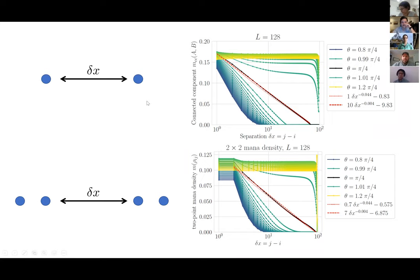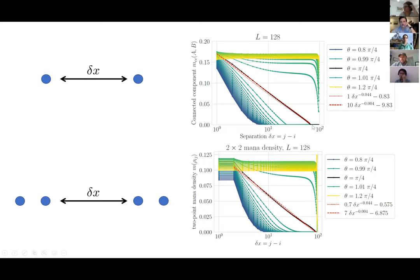Now I'm taking two sites as a function of their separation delta-X — just two qutrits — and asking what is the mana of that two-qutrit system as a function of separation. The black line is at the critical point. The lighter green-yellow lines are in the ferromagnetic phase; the darker blue-green lines are in the paramagnetic phase. In the ferromagnetic phase there's some spontaneous polarization, so the mana has a strong local component everywhere for all separations. In the paramagnetic phase, the mana decays very rapidly and at some distance just becomes exactly zero. Even at the critical point, the mana decays in some characteristic fashion which we can fit to a power law, but still exactly vanishes beyond some point.